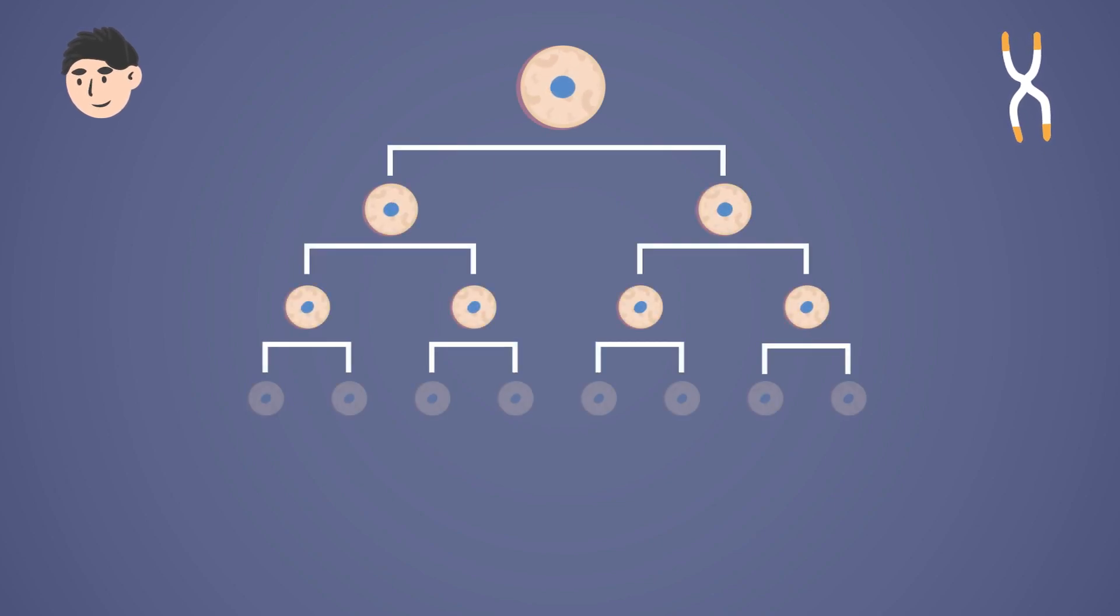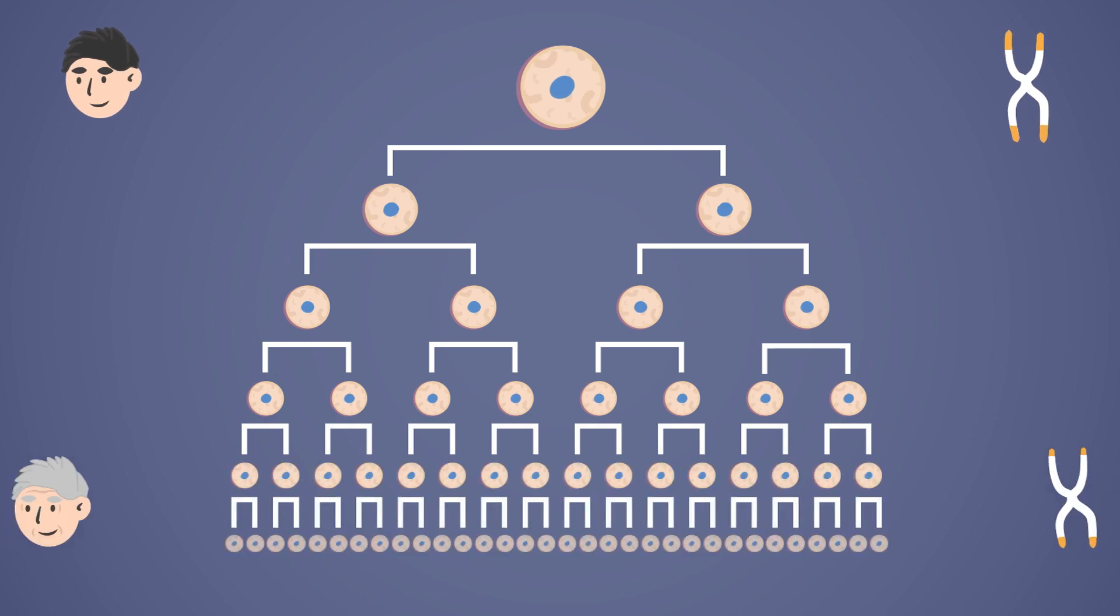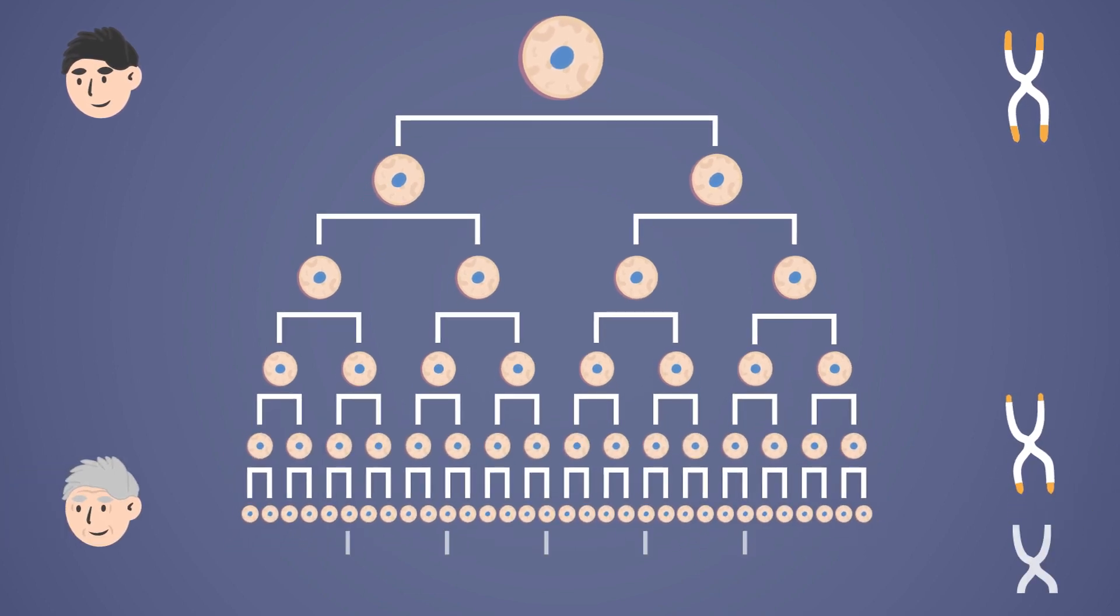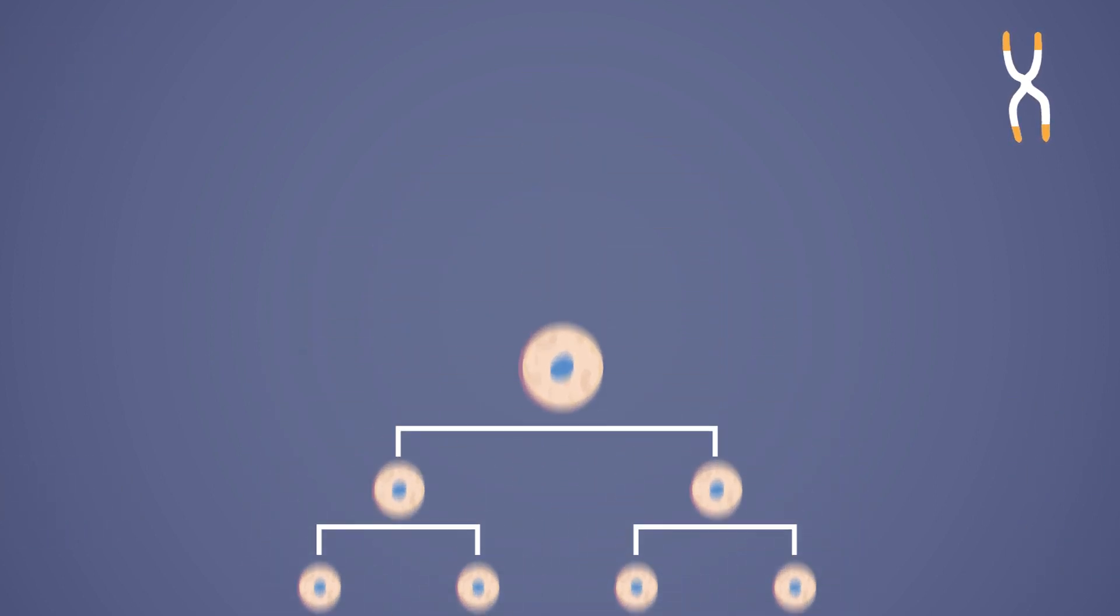When the telomeres length gets too short, the cells stop dividing. As if it were to continue, genetic code could be lost and the cell could become cancerous. The telomeres act as an internal age counter. So to tell how old a cell is, we can look at the length of the telomeres. But this is not the end-all for cells.